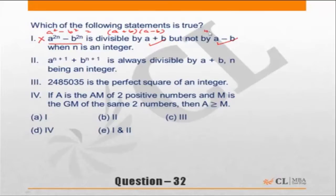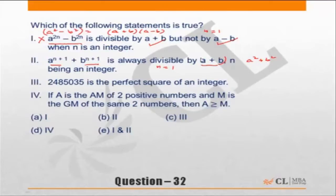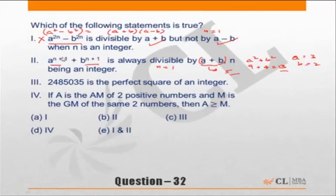All I did was put n=1 to get a simple equation. For statement 2: a to the power (n+1) plus b to the power (n+1) is always divisible by (a+b). Take n=1: it becomes a² + b². Is a² + b² always divisible by (a+b)? If unsure, assume numbers: let a=3, b=2. Then a² + b² = 9 + 4 = 13, and a+b = 5. Since 13 is not divisible by 5, statement 2 is incorrect.